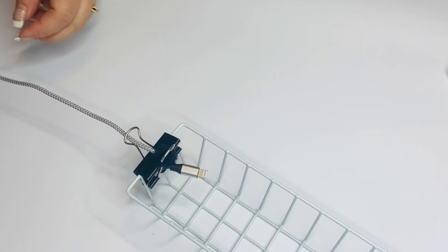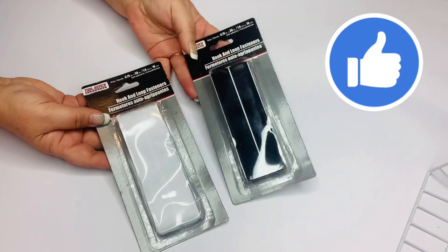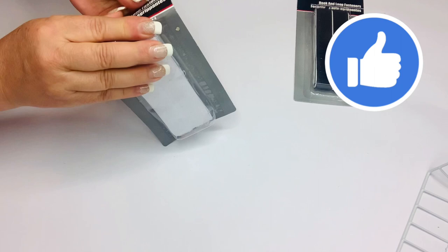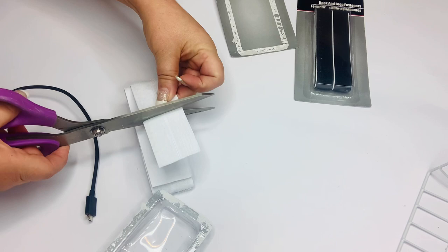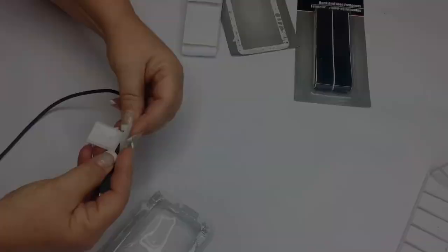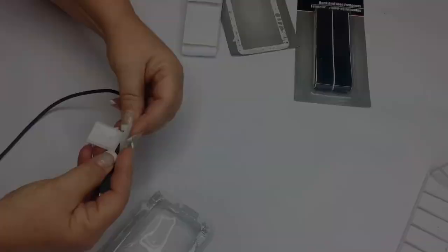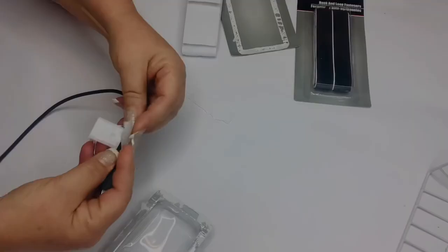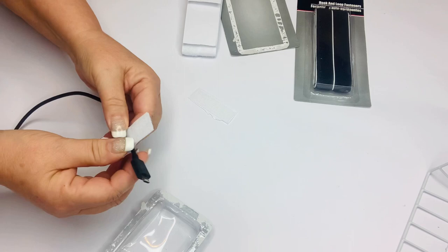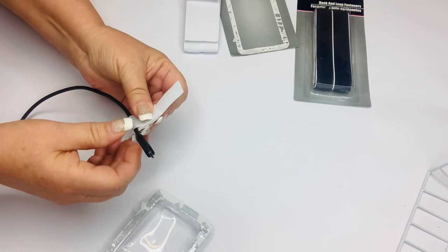Another option is to use their hook and loop tape. They come in either black or white depending on what color your side table is. I just cut a little piece off and wrap one side around my cord and then the other side will go onto the side of my nightstand. This adhesive is no joke on this hook and loop tape, so if you're worried about ruining your finish you may want to use the clip-on option or even use the real Command hook since those are removable.